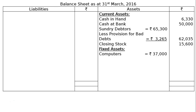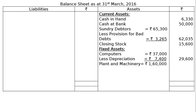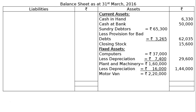Under fixed assets: computers Rs. 37,000 less 20% depreciation Rs. 7,400, as per adjustment number 2 — final column Rs. 29,600. Plant and machinery Rs. 1,60,000 less 10% depreciation Rs. 16,000 — final column Rs. 1,44,000. Motor van Rs. 2,20,000 less 10% depreciation Rs. 22,000 — final column Rs. 1,98,000. The total asset side is Rs. 5,05,565.